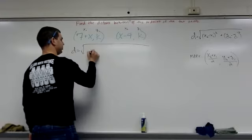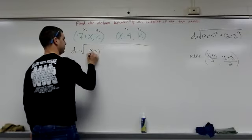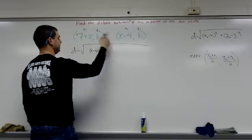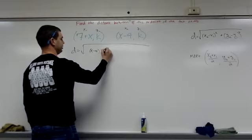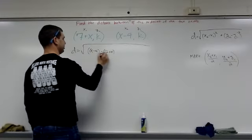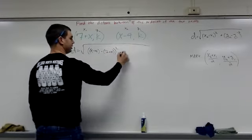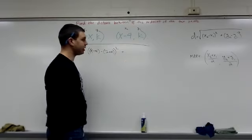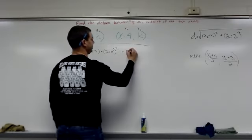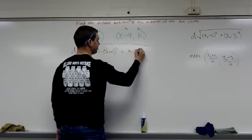So I'm going to do x minus 4. I'm going to put that in parentheses, because I need to subtract 7 minus x. Alright, and that's all squared, plus y2 minus y1, that's just going to be k minus k, k minus k squared.